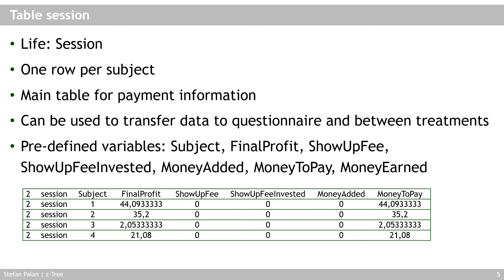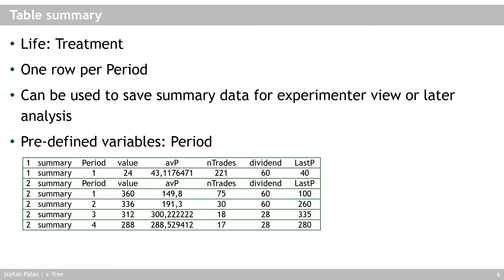The summary table has a lifetime of treatment — available for the entire current treatment including all periods, but not across treatments. It has one row per period, and is used to save summary data or display period-level information to subjects — for example, the average price in the market was 149.8 in the first period and 191.3 in the second. This table is empty by default except for the period variable; whatever you want in it, you must create yourself.